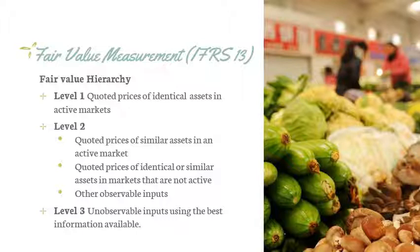The fair value hierarchy gives the highest priority to quoted prices of identical assets in active markets, and the lowest priority to unobservable inputs.